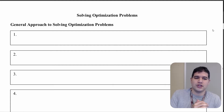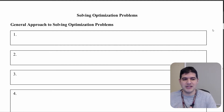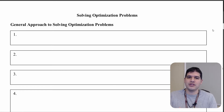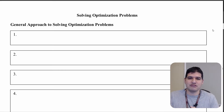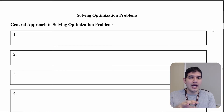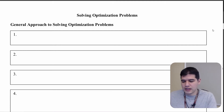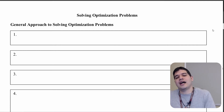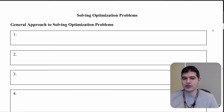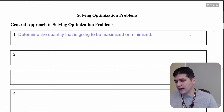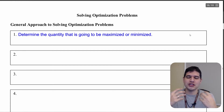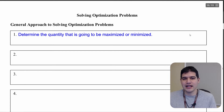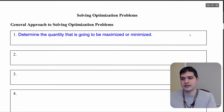There's a general approach to solving optimization problems. I don't go through these five steps every single time, but these are good guidelines to follow. The first guideline is that you want to determine the quantity that is going to be maximized or minimized.